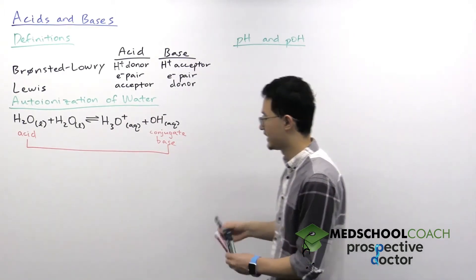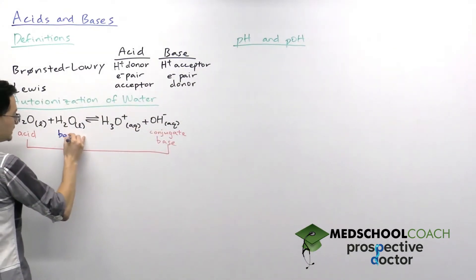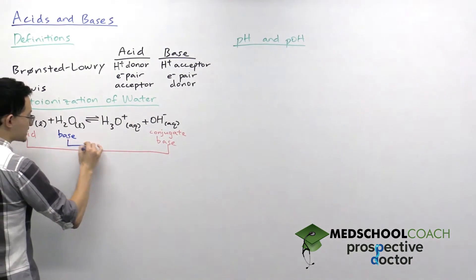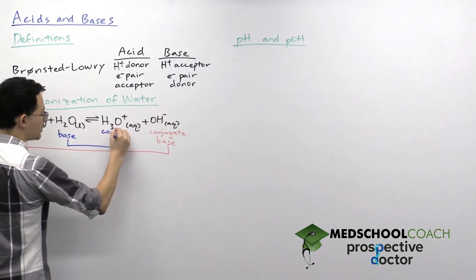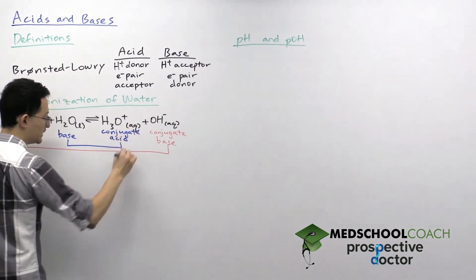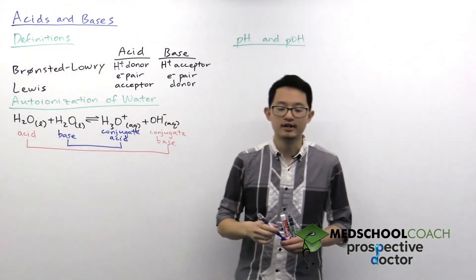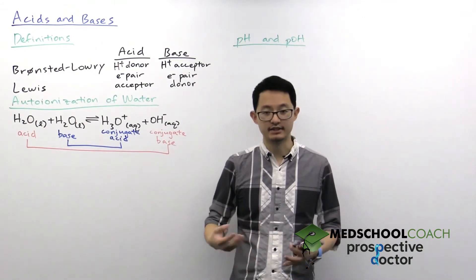At the same time, we have this other water molecule which is acting as a base, and it's going to accept a proton to form the hydronium ion, which we call the conjugate acid. So similarly, the conjugate acid is simply the base after it has accepted its proton.